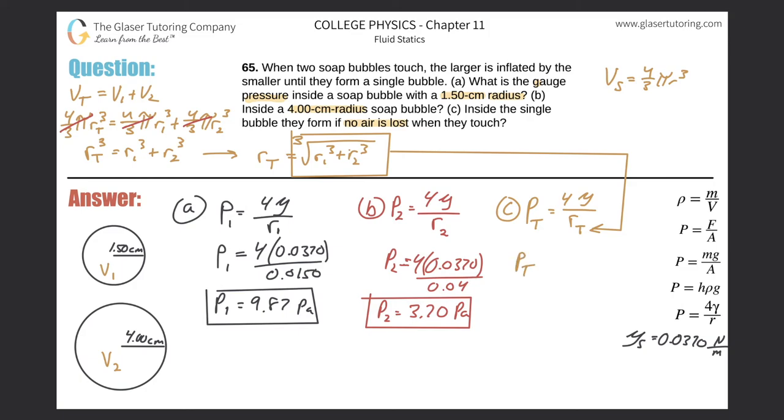This is 4 multiplied by the surface tension, all divided by the cube root of r₁³ plus r₂³. Now we can plug in the values. So this is 4 multiplied by the surface tension 0.0370 - remember that hasn't changed, it's still soapy water - divided by the cube root of 0.015³ plus 0.04³.